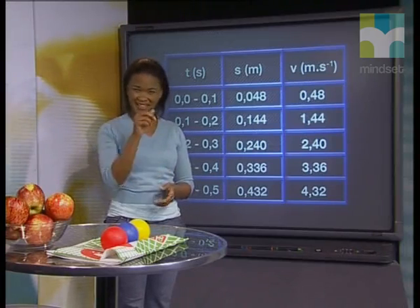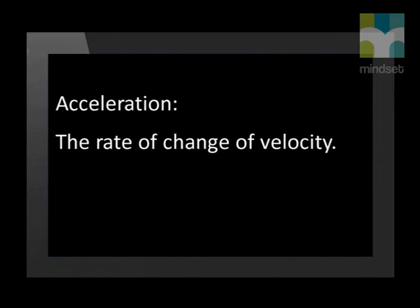Can you remember what we call any change in velocity? That's right — acceleration. Acceleration is defined as the rate of change of velocity. Because the velocity of the mass piece is changing at a uniform rate, we can conclude that the mass piece has a uniform acceleration.